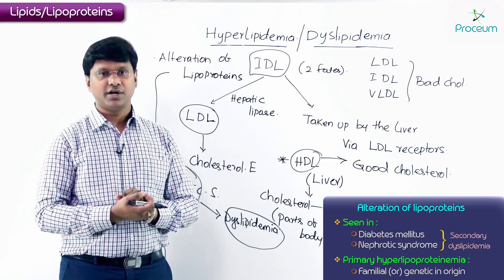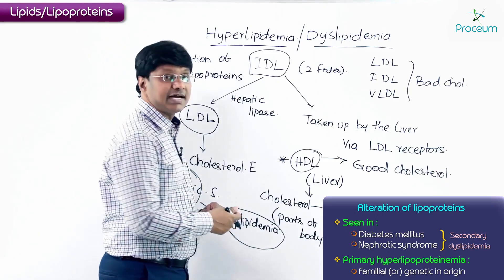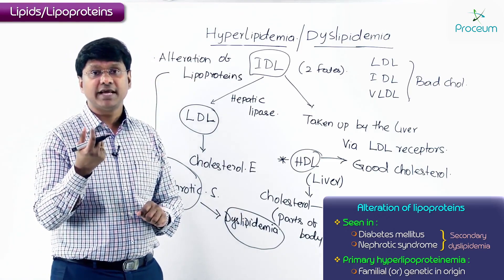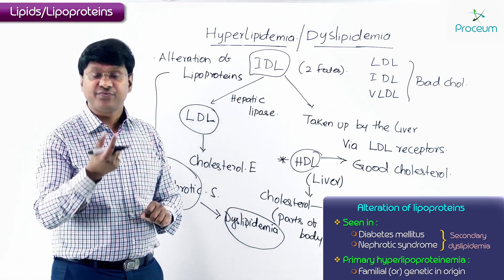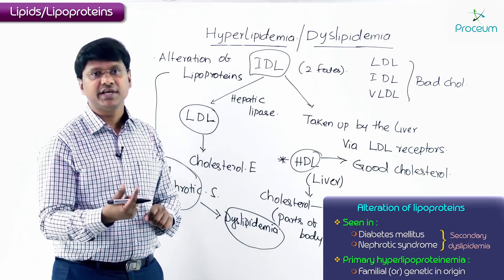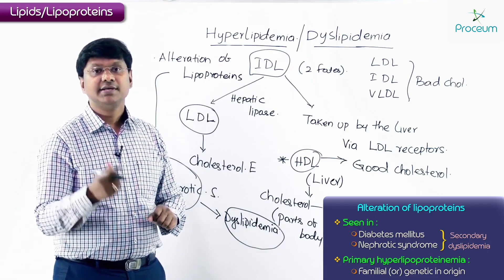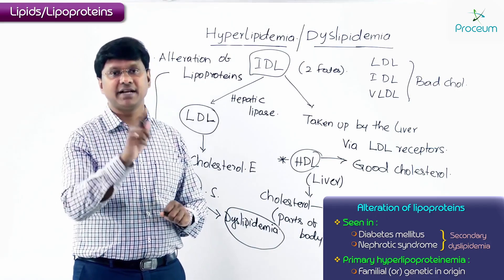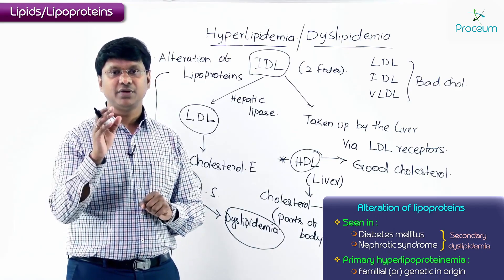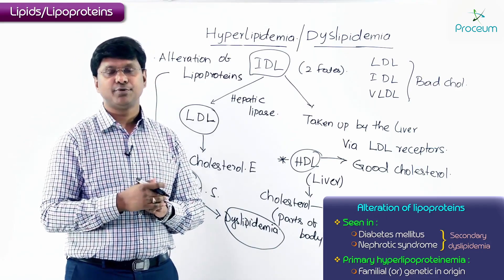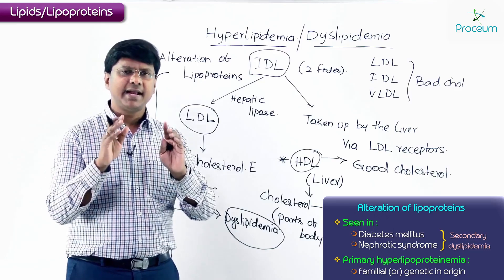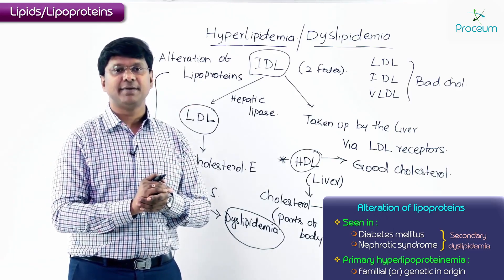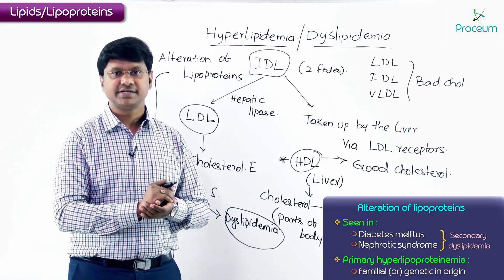There is another type of dyslipidemia or hyperlipoproteinemia that is familial or genetic in origin. This is called primary hyperlipoproteinemia, and there are various types of primary hyperlipoproteinemia which will be discussed in further detail.